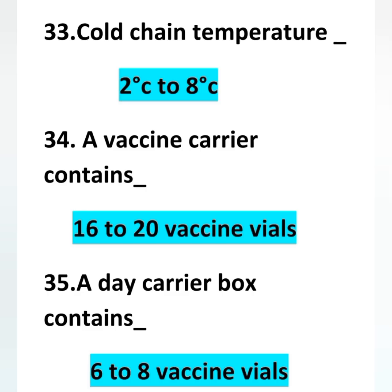Cold chain temperature is usually two degrees Celsius to eight degrees Celsius. A vaccine carrier normally contains 16 to 20 vaccines. A day carrier box is smaller than a vaccine carrier and contains six to eight vaccine vials.